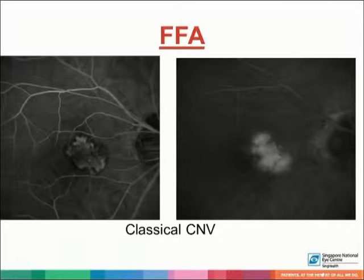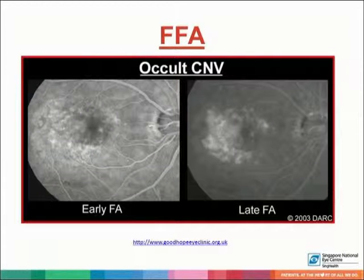This is the fundus fluorescein angiogram showing the features of classical choroidal neovascularization, of which in the early frame there is a presence of a lacy hyperfluorescent, well-defined pattern that results in late leakage at the later frames. This shows occult choroidal neovascularization, of which in the early frames there is a stippled, ill-defined hyperfluorescence that leaks in the late frames with no definite source of leakage.